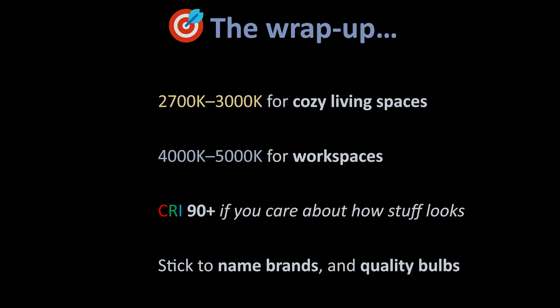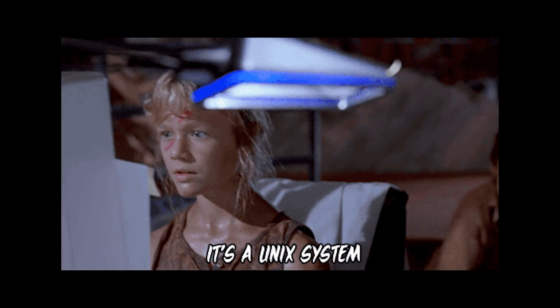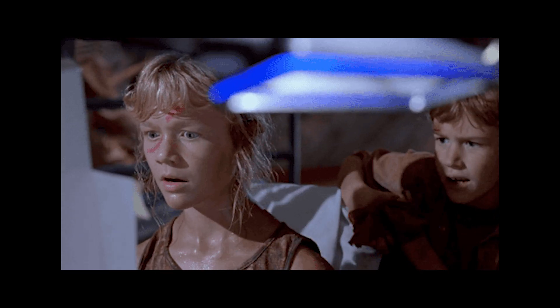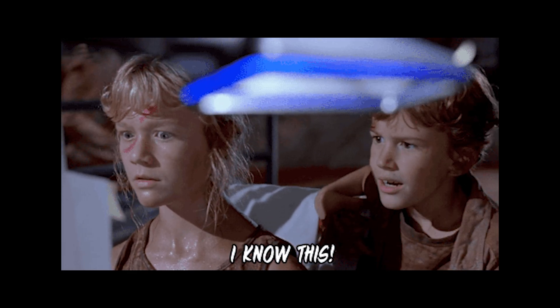The cheat sheet version is something like this. 2,700 to 3,000 for cozy living spaces. 4,000 to 5,000 for workspaces. A CRI of 90 or higher if you care about how stuff looks. And stick to name brands because the $1 no-name bulb will die in six months. Now you can confidently say you actually understand how the Nobel Prize winning thing above your head actually works.